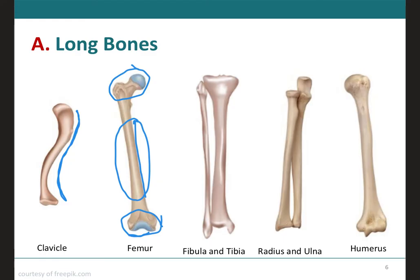Long bones consist mostly of compact bone tissue, which is dense and has smaller spaces, but they also contain a considerable amount of spongy bone tissue, which has larger spaces. Most of the spongy bone is located in the epiphysis, making the bones lighter. Examples include the humerus, ulna and radius, femur, tibia and fibula, and the clavicle.